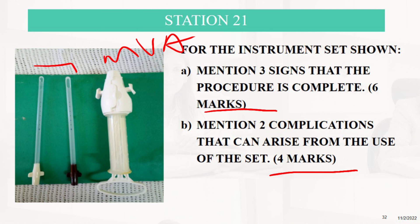Three signs that the procedure is complete: One is when there's red or pink foam without tissue which is seen passing through the cannula. Second is when there's a grating sensation which is felt as the cannula passes over the surface of the evacuated uterus. Third is when the uterus contracts around or grips the cannula.